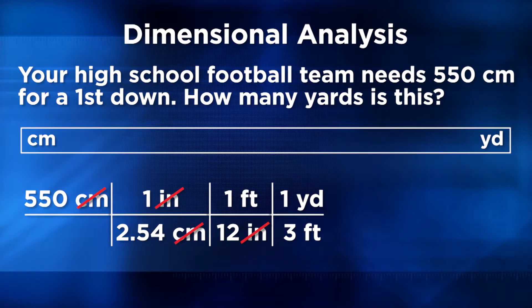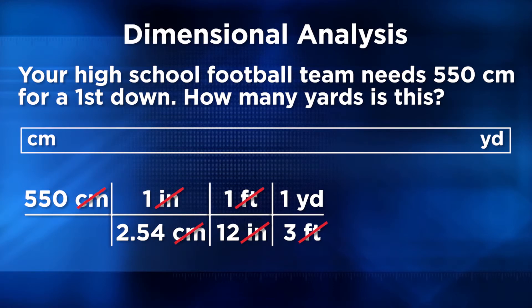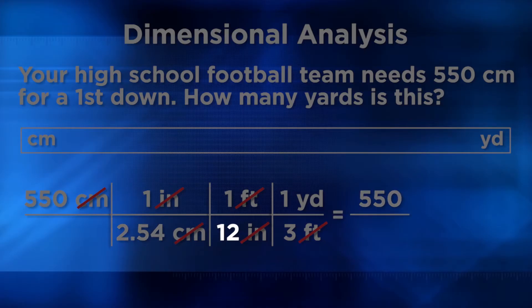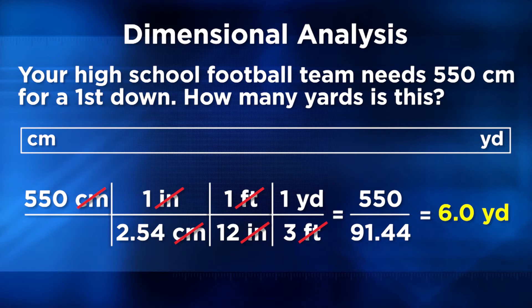We know we're done with the converting when the unit we're solving for — yards — is in the upper right-hand corner of the conversion chart. All we have left to do is the math. Multiply 550 times 1 times 1 times 1 — those are the numbers in the numerator — which equals 550. Then multiply 2.54 times 12 times 3 in the denominator, which equals 91.44. Then divide 550 by 91.44 to get 6.0. So 550 centimeters is the same as 6.0 yards for the first down.